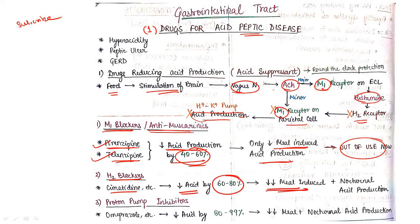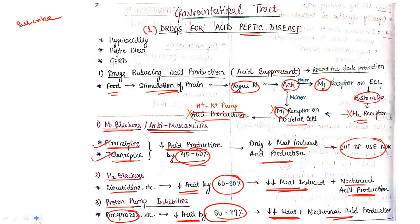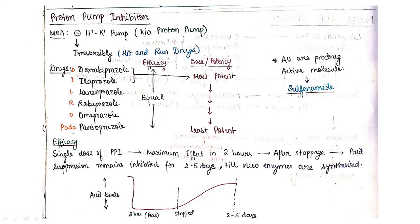The next group of drug is proton pump inhibitors like omeprazole. It will decrease acid production by 80 to 99 percent and will decrease both meal-induced as well as nocturnal acid production. Now we will discuss in detail about all of these drugs. This was the basic overview, now we are moving to the details.